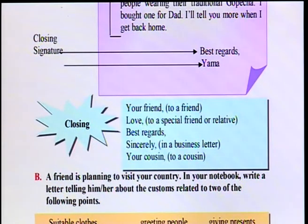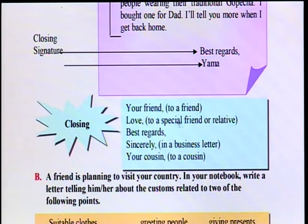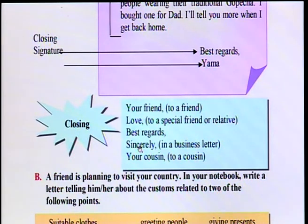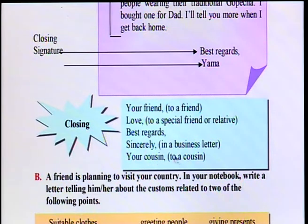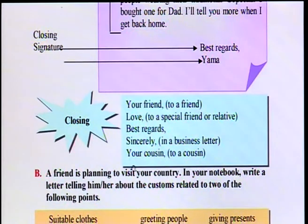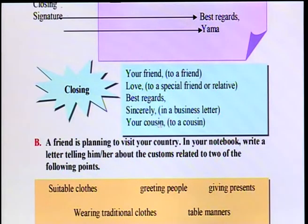Let's see some more expressions for the closing. In closing, we can use another expression like 'your friend,' or 'love' for a special friend or relative. We can also use 'best regards.' The next word we can use is 'sincerely' — for a more personal name. And we can also write 'your cousin' if you are writing to a cousin.